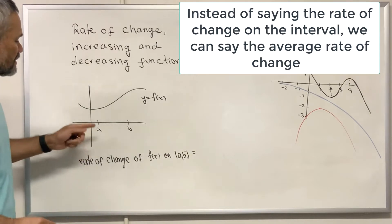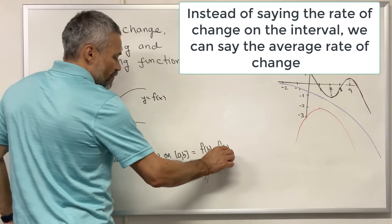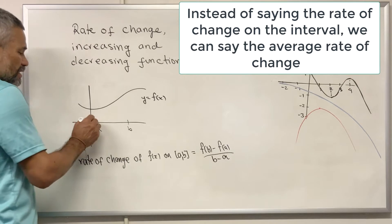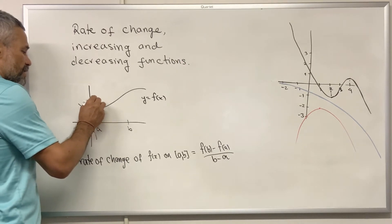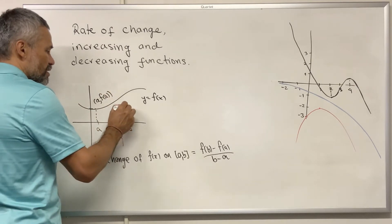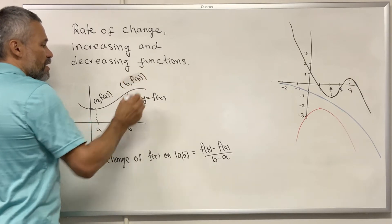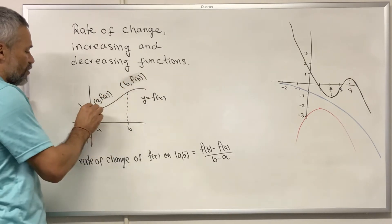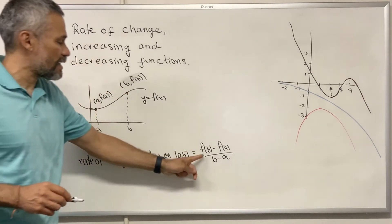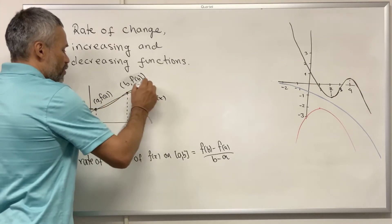The rate of change is defined as f(b) minus f(a) over b minus a. Notice that if this point is (a, f(a)) and this point is (b, f(b)), we can see that if we compute the slope of the line that goes through these two points, it is exactly this. Then the rate of change is the slope of the line that goes through these two points.